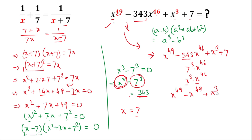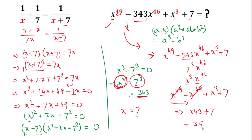The x⁴⁹ and −x⁴⁹ cancel out, leaving x³ + 7. Since x³ = 343, we get 343 + 7 = 350. So the value of this expression is 350. This simple trick — substituting x³ instead of x — makes the calculation easy. That ends today's video; if you liked it, please subscribe. Thank you for watching.